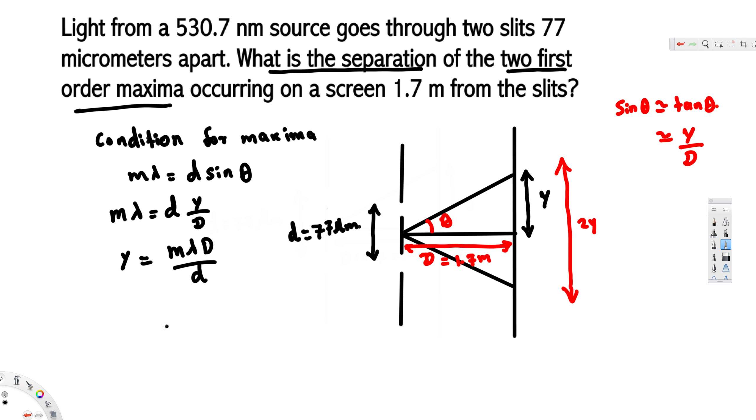M is the order number. Since they have mentioned this is the first order, it's going to be just one. And the wavelength is provided, that is 530.7 times 10 to the power of minus 9, because it's nanometers. And then we have capital D, that is 1.7, and that one divided by small d. Small d is given by 77 micrometers, so this is going to be 77 times 10 to the power of minus 6.